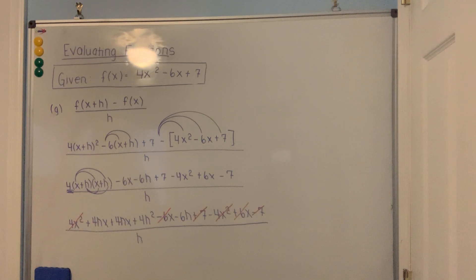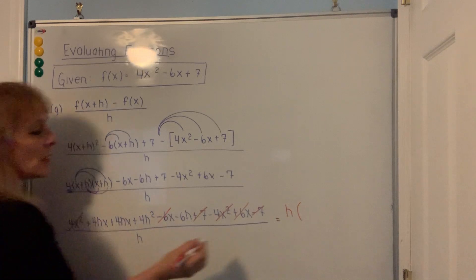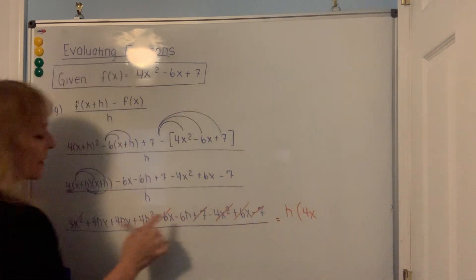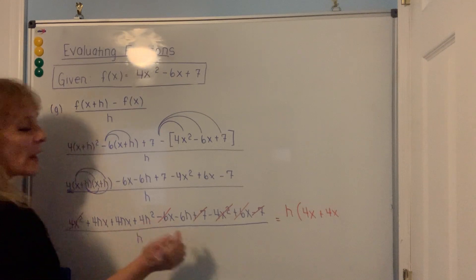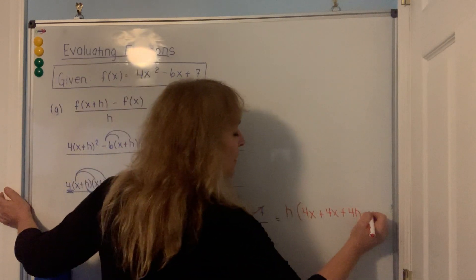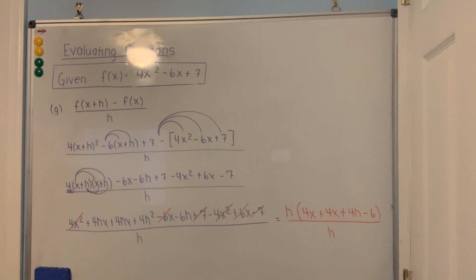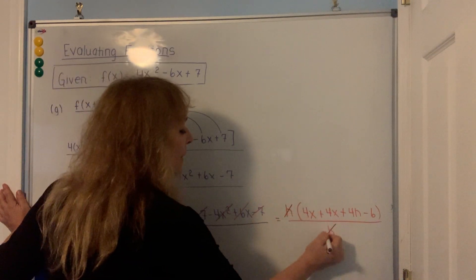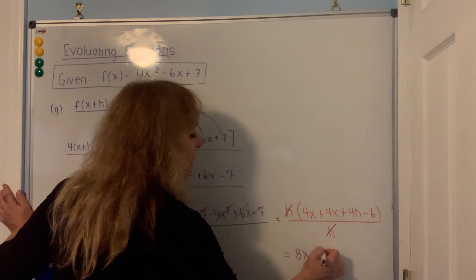Looking at the four terms remaining in the numerator, each has an h in it. Factor out h: you get h times the quantity 4x plus 4x plus 4h minus 6, still over h. The h in the numerator cancels with the h in the denominator. Combining like terms: 4x and 4x is 8x, so the final answer is 8x plus 4h minus 6.